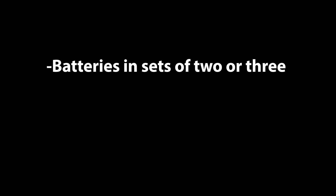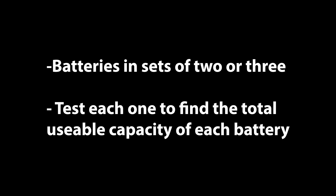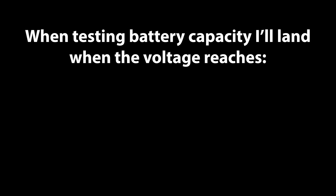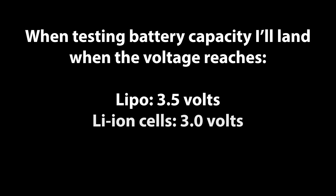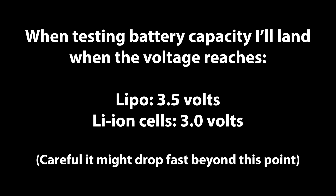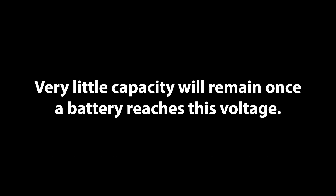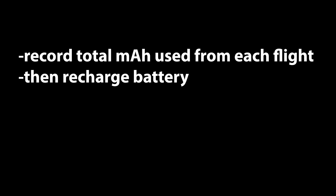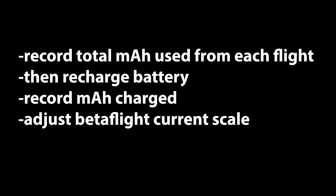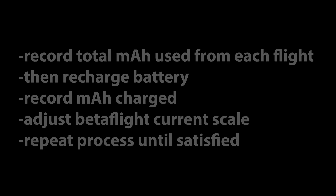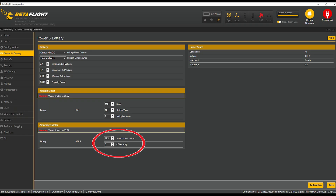Part of how this works is having two or three identical battery packs. I'll do test flights with all three batteries and fly them close to the full capacity, carefully watching the voltage, ready to quickly land when the voltage gets to 3.5V for newer lipos or 3V for lithium ion cells. Going lower than that can risk damaging the batteries, and below these voltages there is generally very little capacity remaining. After each flight, I record the total milliamp hours used and compare this to how many milliamp hours a charger says it takes to recharge that battery. This information is then used to ensure that the current sensor is properly calibrated. If you want to learn more about calibrating the current sensor, you can search that on YouTube — I'll add a link to that in the description below.